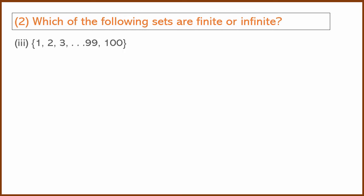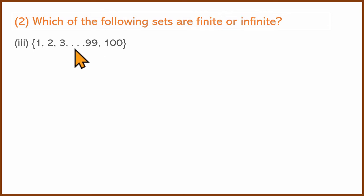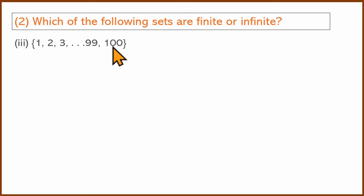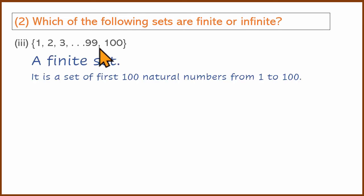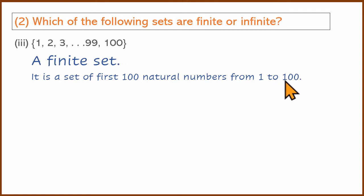There is a third question: 1, 2, 3, ... 99, 100. This is the set {1 to 120}. This is 1, 2, 3, ... — this is a finite set. How many elements are there? There are 100. The first 100 natural numbers form a set. Therefore, it is 1 to 100.